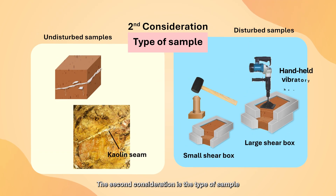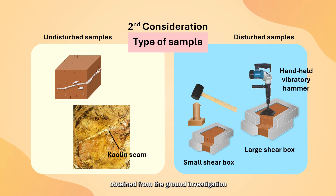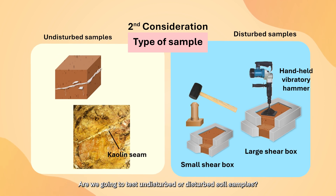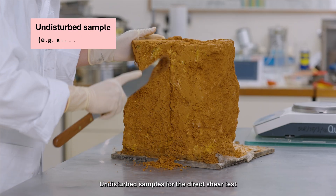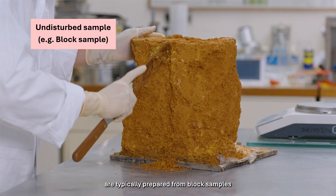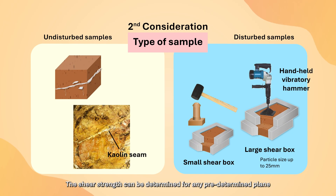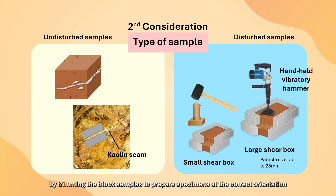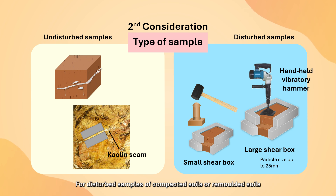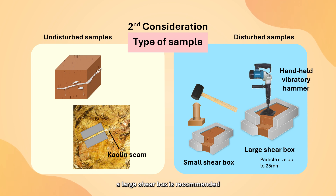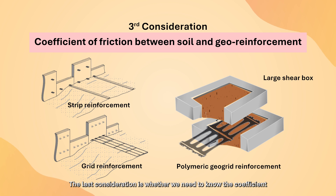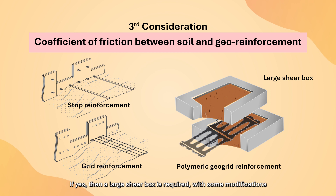The second consideration is the type of sample obtained from the ground investigation — are we going to test undisturbed or disturbed soil samples? Undisturbed samples for the direct shear test are typically prepared from block samples. For disturbed samples of compacted soils or remolded soils containing large particles up to about 25mm, a large shear box is recommended. The last consideration is whether we need to know the coefficient of friction between a soil and a geo-reinforcement. If yes, then a large shear box is required, with some modifications to the standard test procedures.